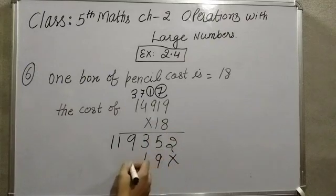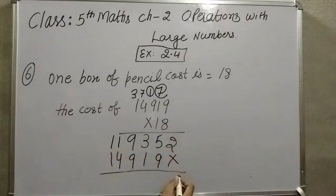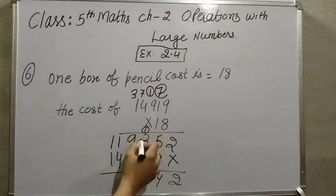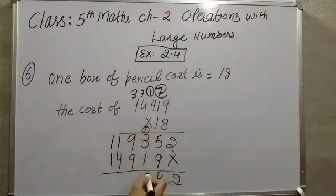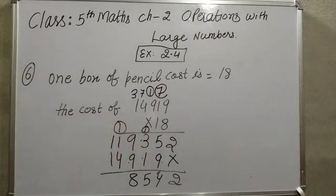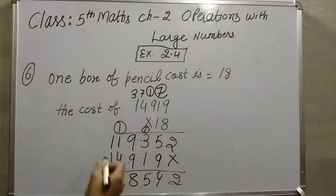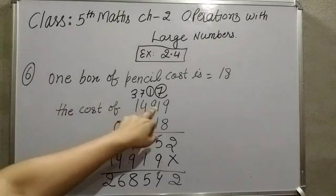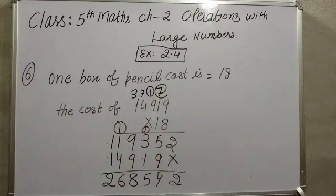Now multiplying by 1: 1 × 9 = 9, 1 × 1 = 1, 1 × 9 = 9, 1 × 4 = 4, 1 × 1 = 1. Now adding: 2, then 9 plus 5 = 14, so 4 here with 1 carry; 3 plus 1 = 4, 4 plus 1 = 5. Then 8 × 8 = 18 with 1 carry; 4 plus 1 = 5, 5 plus 1 = 6. Here we get 2, so 4 and then 1 — giving us the cost of 14,919 pencil boxes.